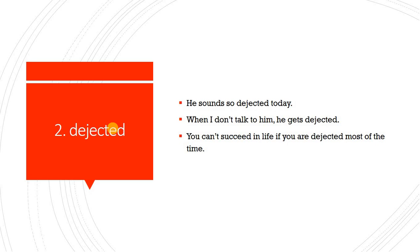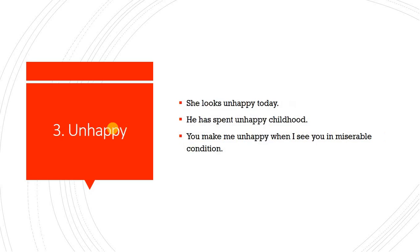Number two: When I don't talk to him, he gets dejected. Jab main us se baat nahin karta, woh udaas ho jaata hai. Number three: You can't succeed in life if you are dejected most of the time. Aap zindagi mein kamyab nahin ho sakte agar aap har waqt udaas rehte hain, kyunki udaasi aapko kha jaati hai aur aapko koi kaam nahin karne deti.